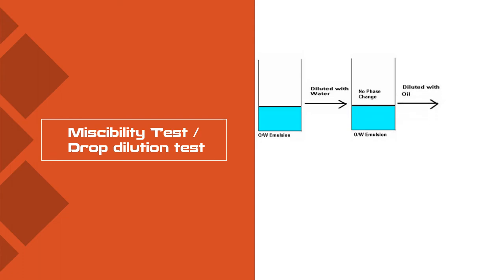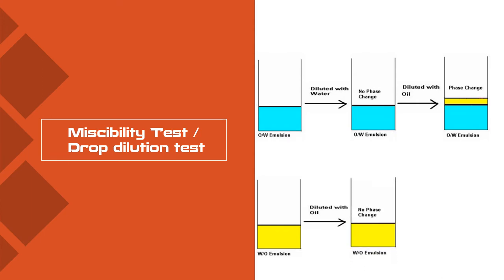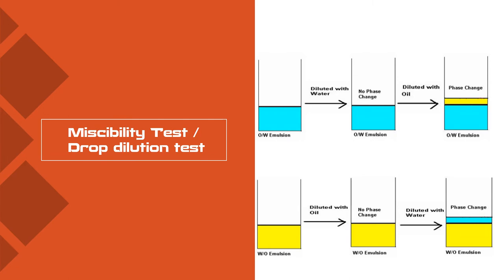Then to the same emulsion, add some oil. On adding oil, you can observe a phase change, which again confirms it is an oil in water emulsion. In the next situation, take a water in oil type of emulsion. Here oil is the continuous phase. When you add oil, there is no phase change — confirming it is water in oil. When you add water to the same, you observe a phase change, also confirming it is water in oil type.